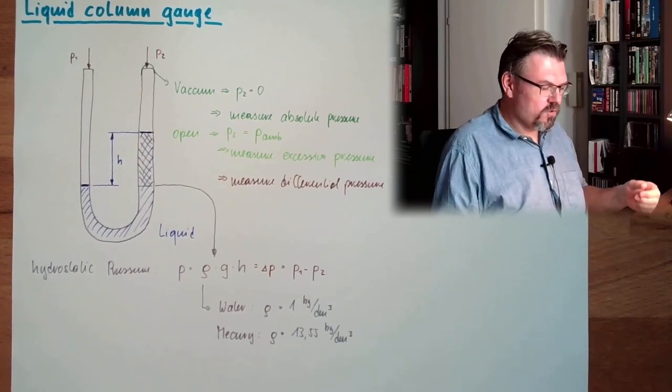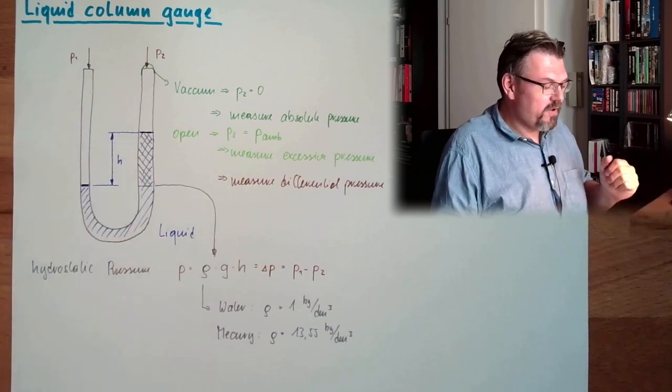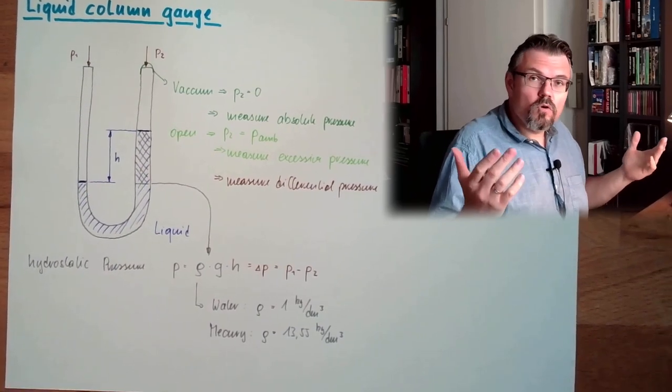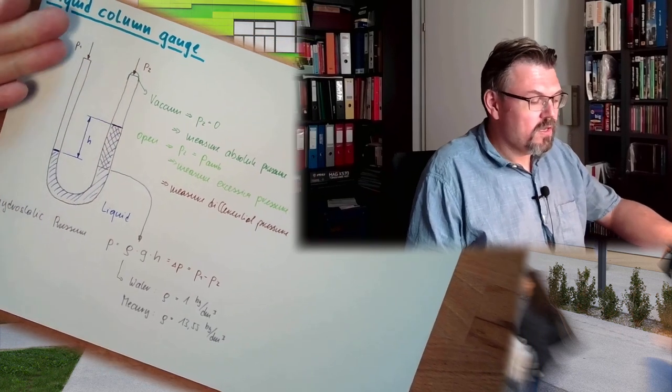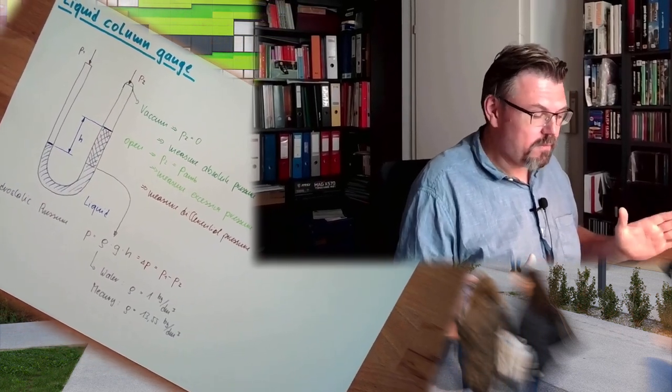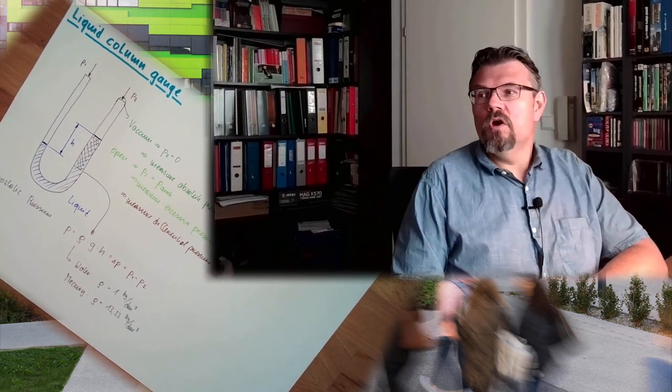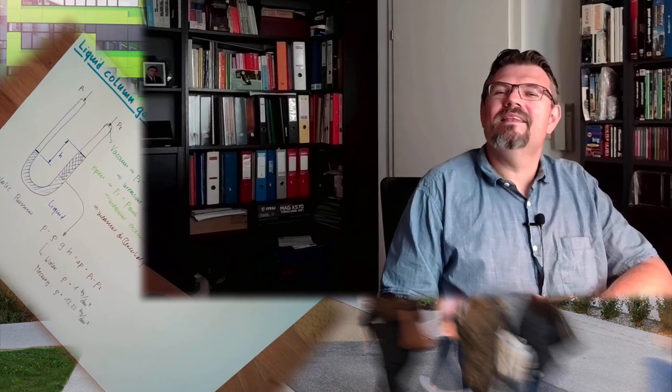This is actually how this is working. So compensate the pressure difference with the hydrostatic pressure of liquid. And if this is vacuum, then you could measure also ambient pressure, the absolute pressure. Alright, so in technical applications, this is not often used anymore. There are other elements, which are usually using some elastic element. How those are working, I will explain in the next video. For this time, thank you very much for listening, goodbye.